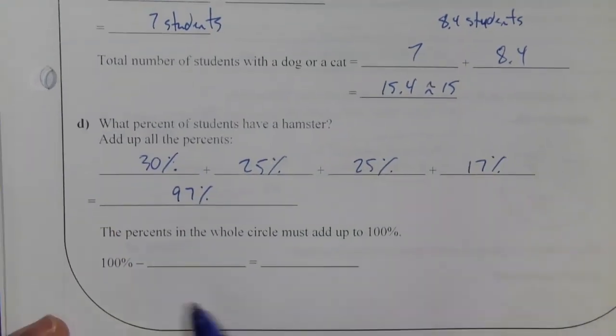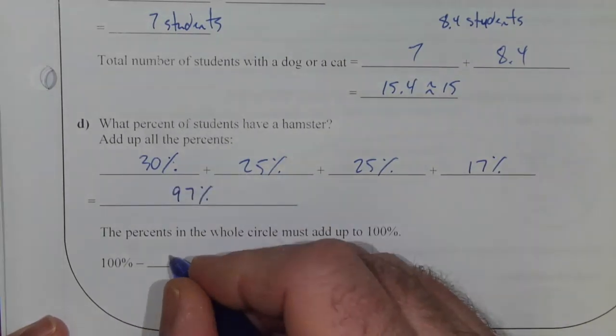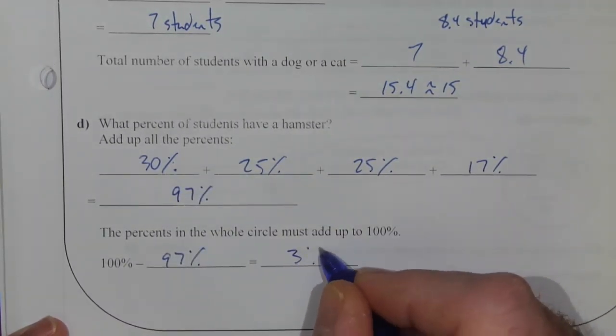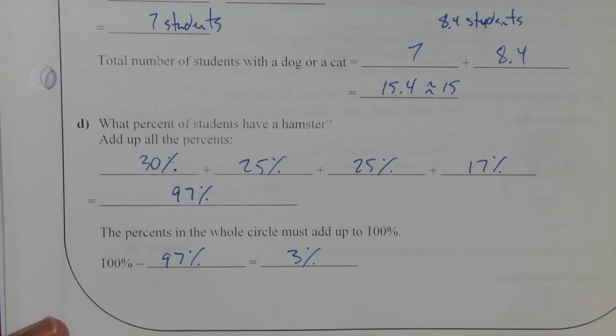So to figure out the hamster portion, we take 100%, subtract the 97% that we've already got accounted for, and we're left with 3% of the students have a hamster out of the class. So that's your Show You Know.